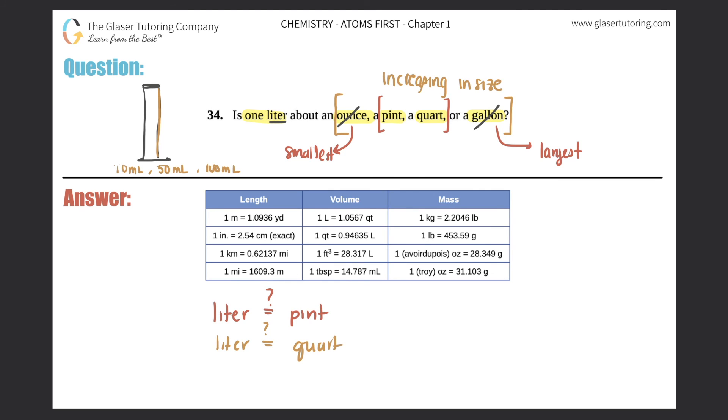Now let's go to this conversion chart which you guys should be very familiar with as these questions are progressing. I'm looking at the volume part because liter is a volume, it is not a length and it is not a mass. So you could automatically get rid of the column on the left and the column on the right. We're only looking at this middle one here.